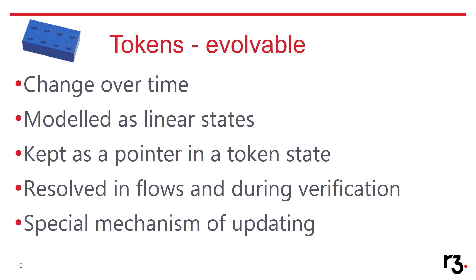An evolvable token is a state that can change over time. You can think about how the valuation can change, or it can be a stock where the price changes. Because we have this split between token ownership and the actual thing underneath, that's why we have this notion of evolvable token. We model them as linear states. We keep them in fungible and non-fungible tokens as a pointer, and that is resolved in flows and during the verification.